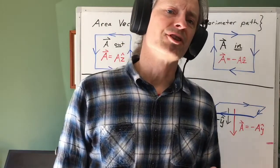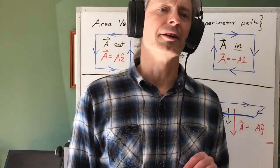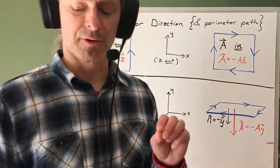Hi everybody. In this video, I want to make a mathematical connection between the area vector for a particular area and a positive direction to go around the perimeter.